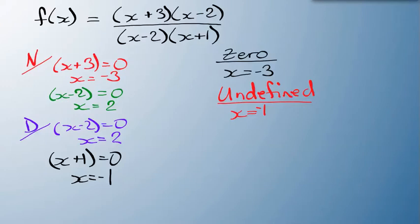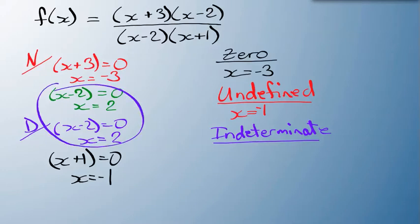Now the last one, when we call it indeterminate, any time both the top and bottom are zero at the same time, then it's considered indeterminate. Now if I look at it, those two are the same, these two right here. So it's going to be indeterminate any time x equals 2.